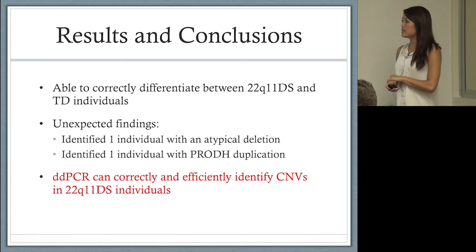We also found some unexpected findings that were hard for me to detect via qPCR. One individual had an atypical deletion, one individual had a duplication. We concluded that DDPCR can correctly and efficiently identify these CNVs in these individuals.